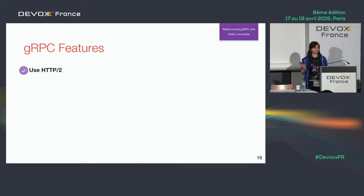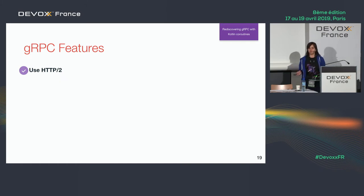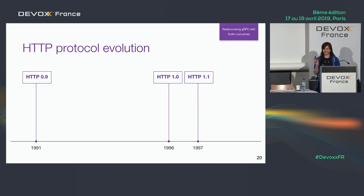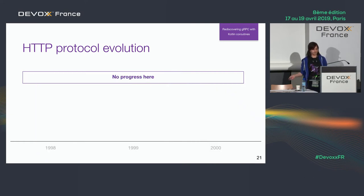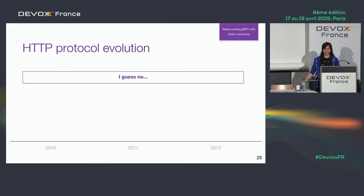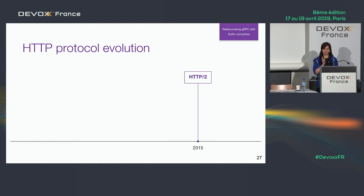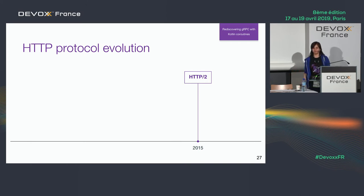gRPC has cool features. First of all, gRPC is built on top of HTTP2. A brief history: in 1991 it was version 0.9, then 1996, 1997, then no progress for many years — and suddenly in 2015, HTTP2 appeared. I started school, graduated, went to university, graduated from university, and only after that did HTTP2 appear. They had much time to think because the whole internet changed, and they were working all that time.